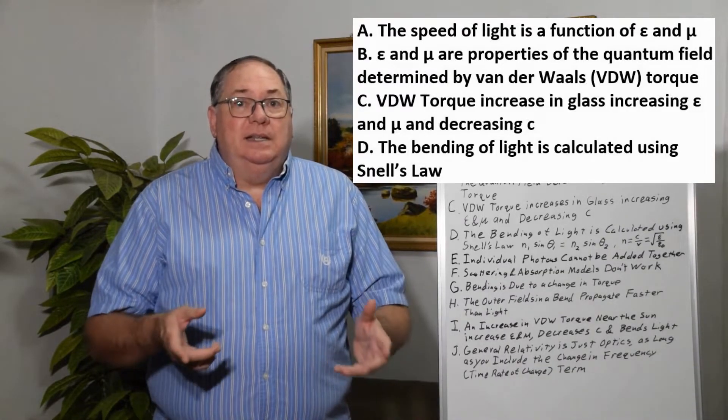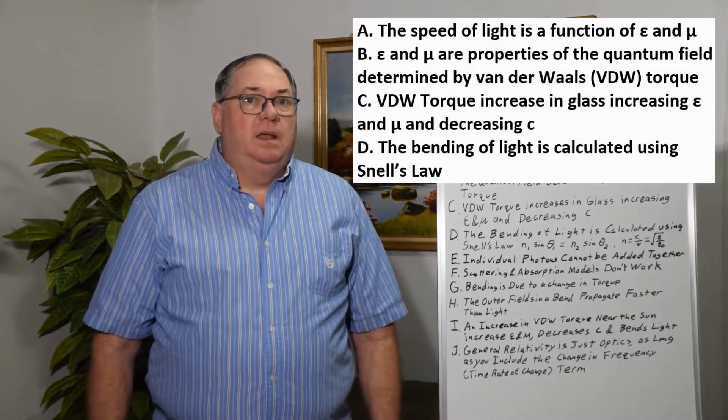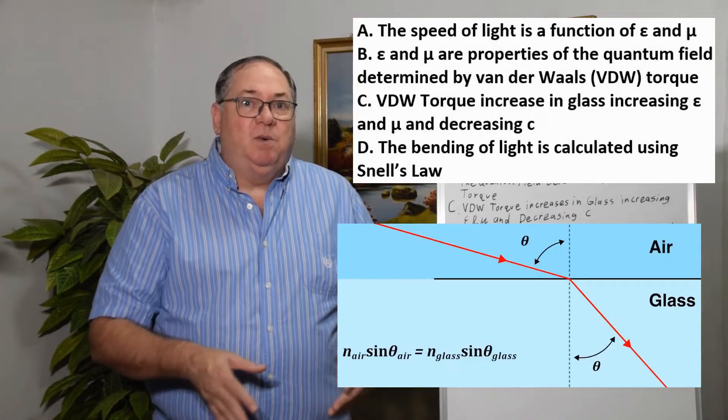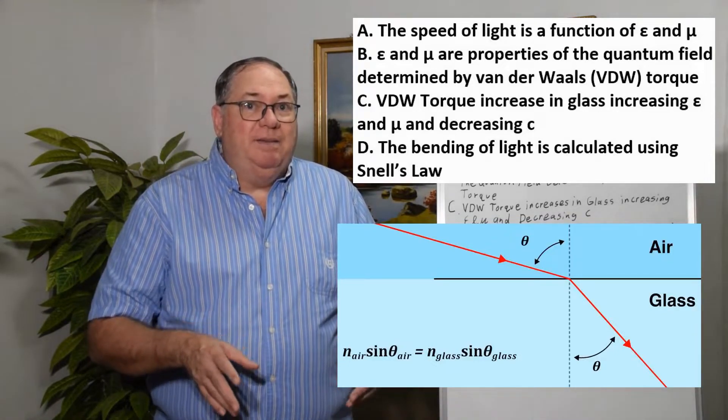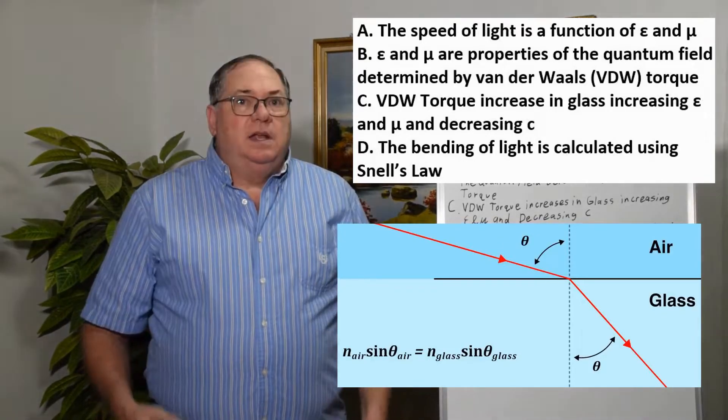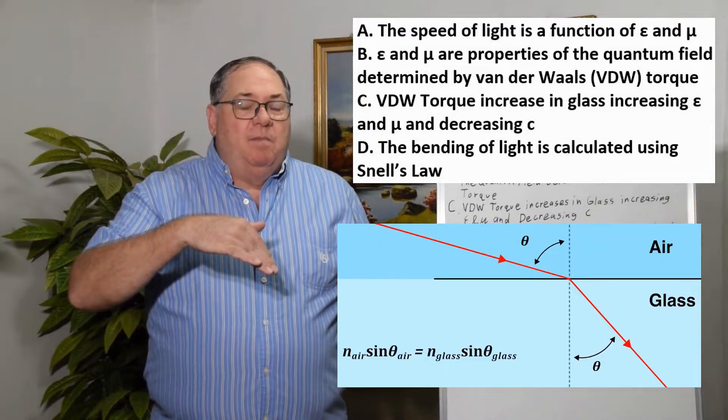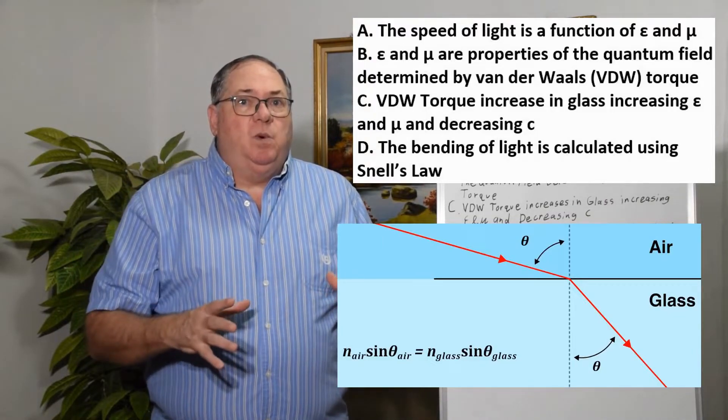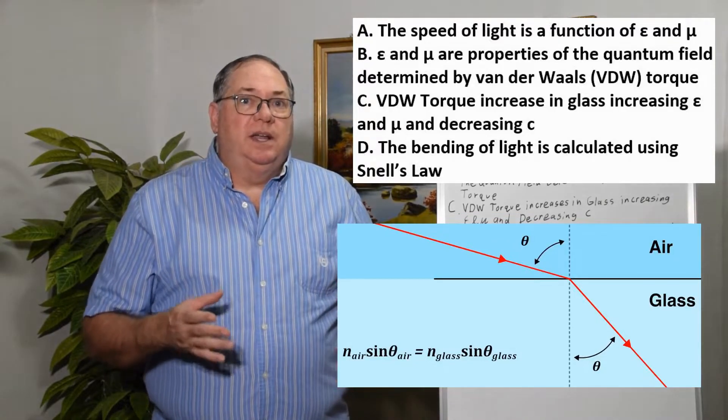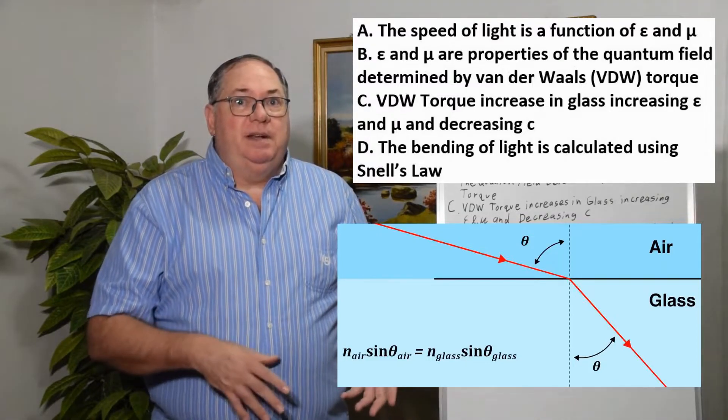The quantum field is the medium of transmission for light, even if it's inside glass or water, because glass and water are still mostly empty space, which really means mostly quantum field. When light enters glass, the glass, because it has more atoms, has greater torque. The greater torque increases the permittivity and permeability, which decreases the speed of light.